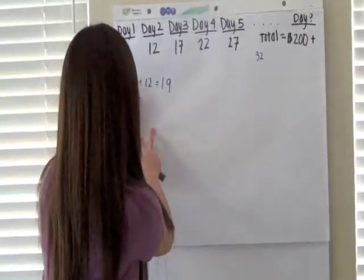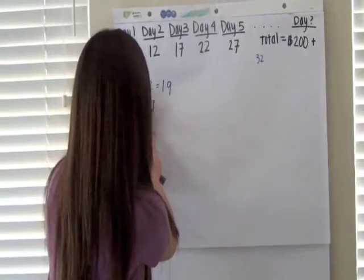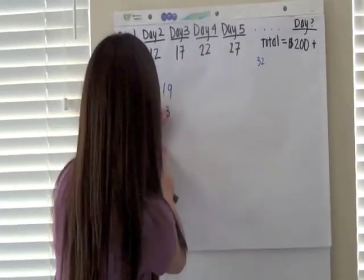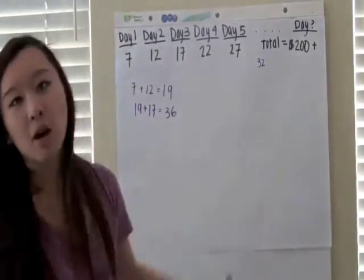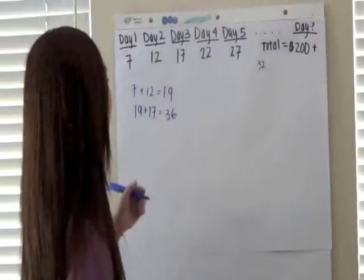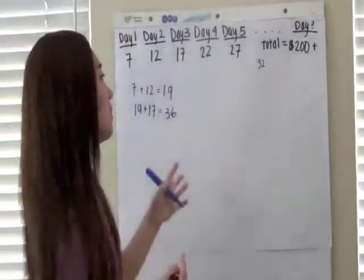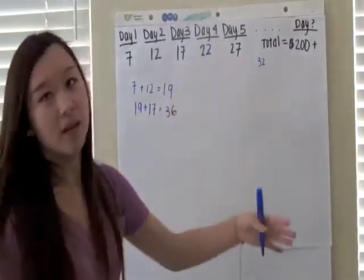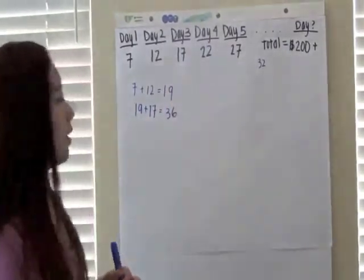So 19 plus 17 is 36. 36 is also not more than 200. So you keep adding. Now, I'm not going to do all these steps, but you have to keep doing this. Keep adding the number of days until you get over 200.